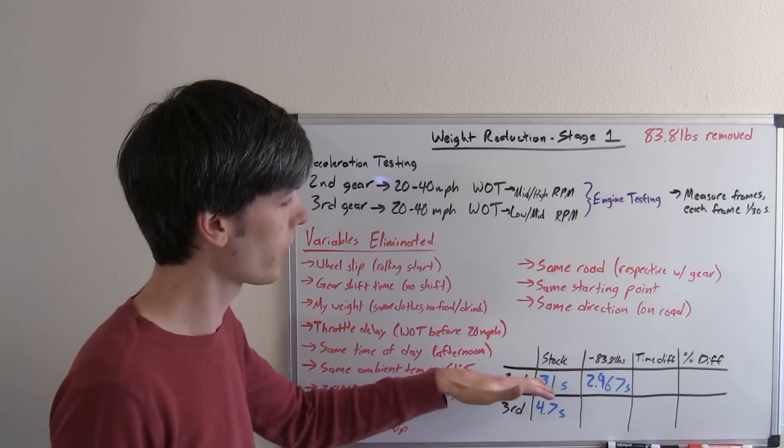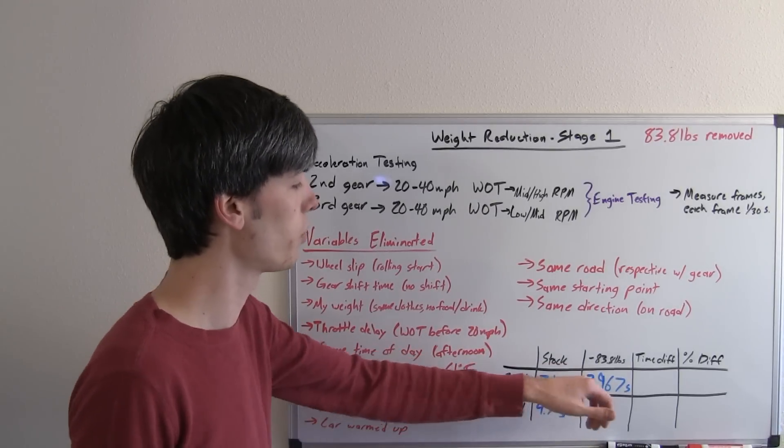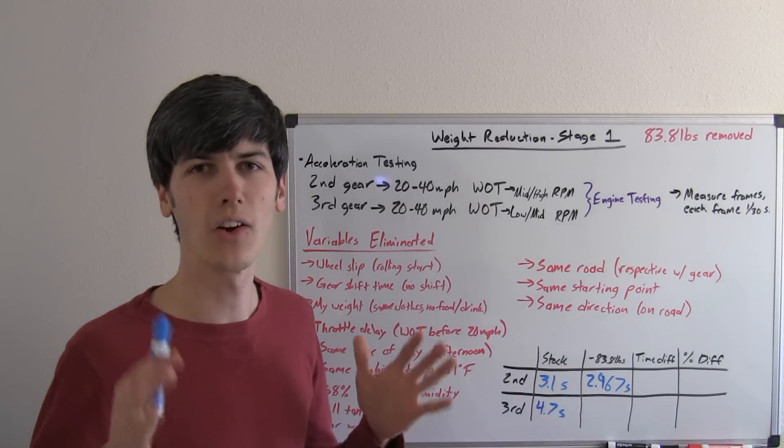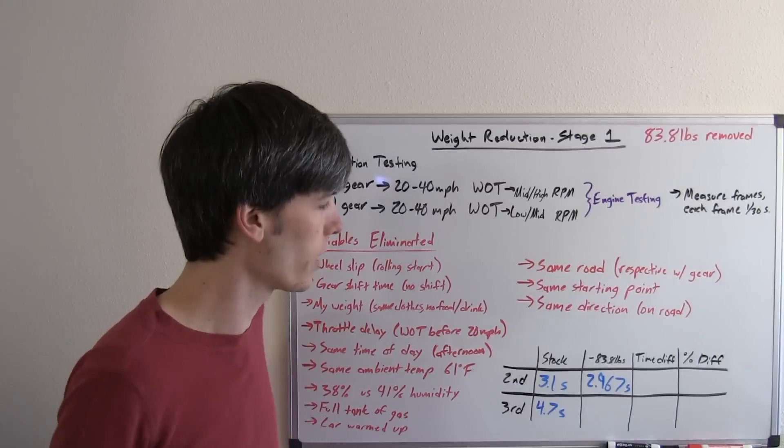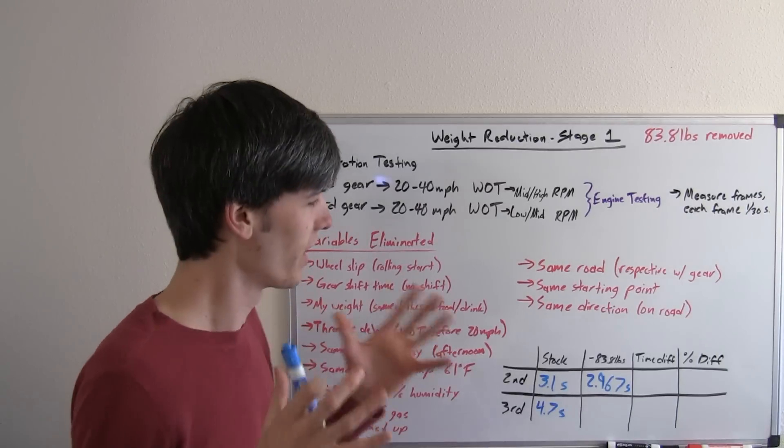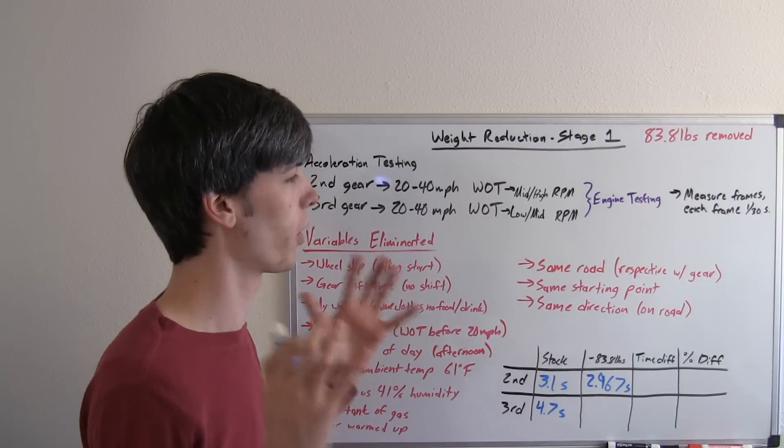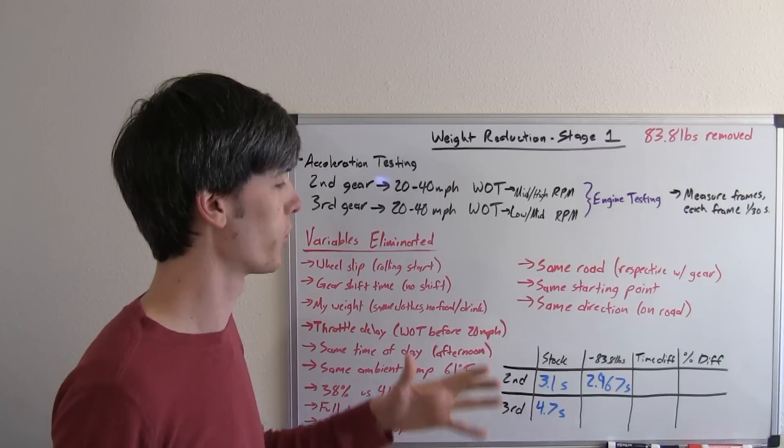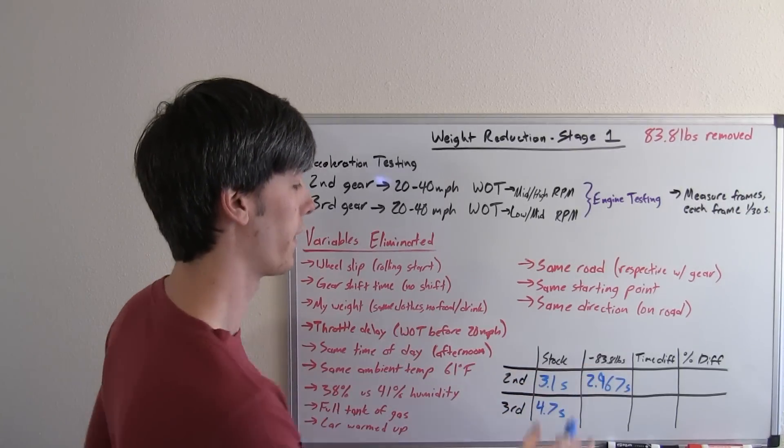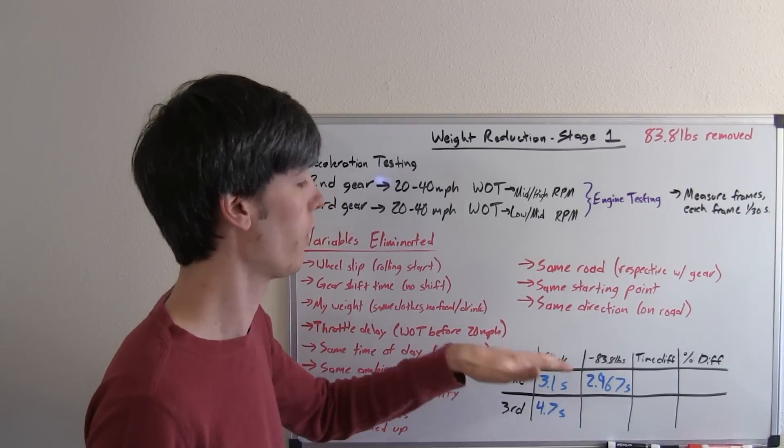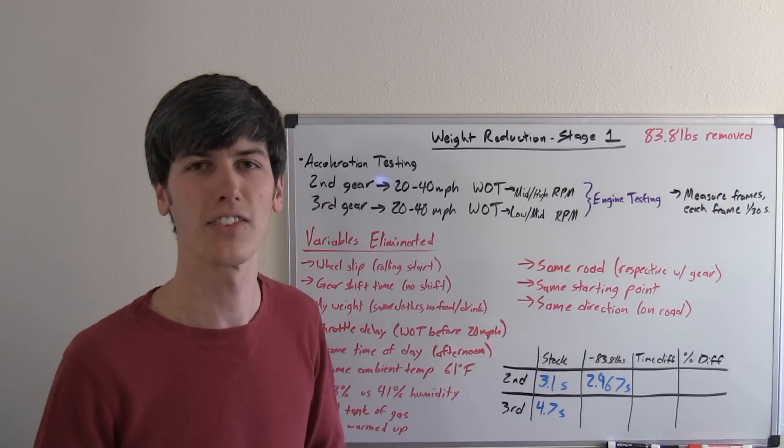So with the weight reduction in second gear, we have an average time of 2.967, and once again, all of the tests were the exact same duration, which is awesome because that's just very hard to do to get perfectly repeatable tests. So it's very cool that they were all at the same time, and that gives us an accurate representation of the difference in weight and the difference in acceleration.